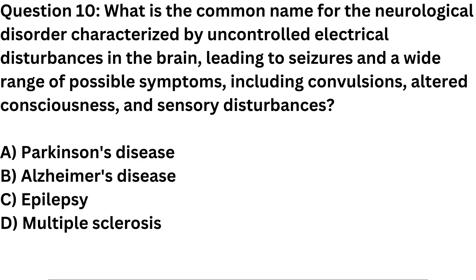Question 10. What is the common name for the neurological disorder characterized by uncontrolled electrical disturbances in the brain, leading to seizures and a wide range of possible symptoms, including convulsions, altered consciousness, and sensory disturbances? a. Parkinson's disease. b. Alzheimer's disease. c. Epilepsy. d. Multiple sclerosis.